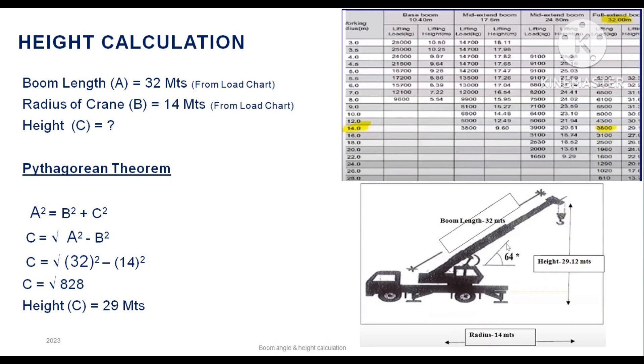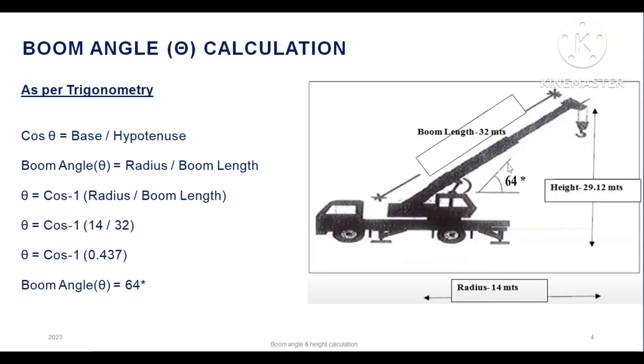So likewise, for the boom angle, we have cos θ = base/hypotenuse, which is a trigonometric formula. Here, theta is nothing but our boom angle, base is nothing but our radius, and hypotenuse is our boom length.